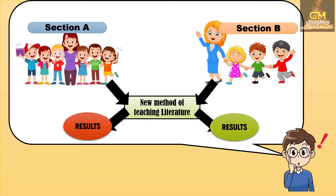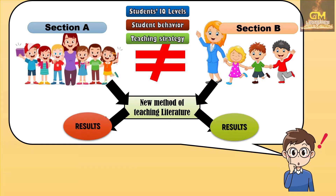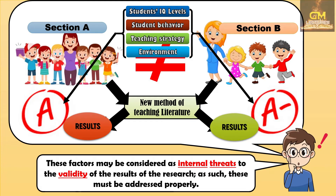Since the participants involved have not been assigned randomly to a particular group, we cannot say that section A is equivalent or similar to section B. It could actually be considered that section A and section B are different in terms of the students' IQ levels, the students' behavior, the teaching strategy used by each teacher in each section, as well as the environment of the classroom itself. All these factors might affect how each particular section would actually perform. These factors may be considered as internal threats to the validity of the results of the research, and as such, these must be addressed properly.